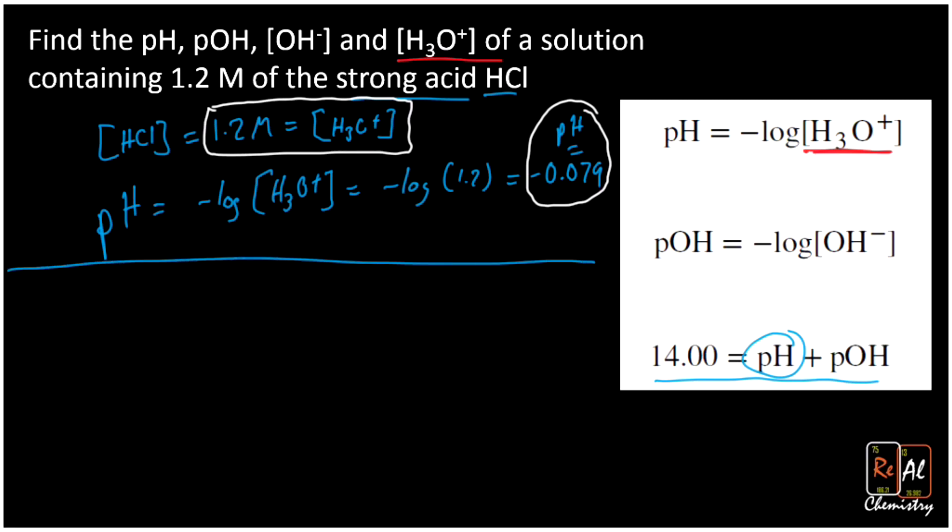So let's go to this next part of the problem where we're going to solve for pOH. So 14 is equal to pH plus pOH. So if I want to solve for pOH, all I have to do is subtract pH from both sides, and I'm going to get 14 minus pH equals pOH. So that's 14 minus a negative 0.079 equals 14.079. That's my pOH.